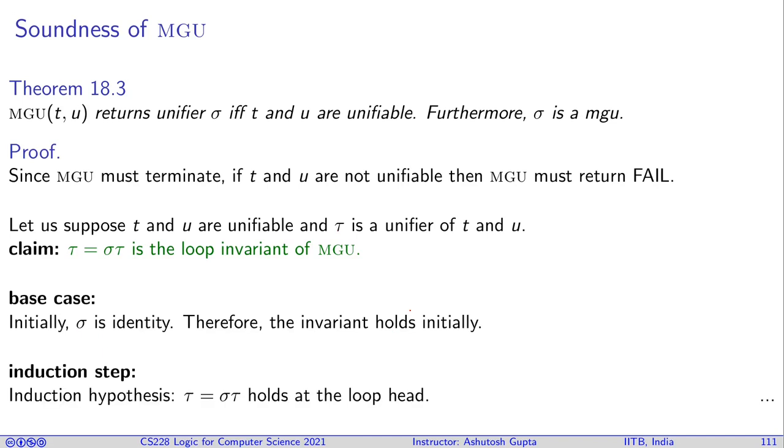Now we assume an induction hypothesis that at the head of the loop, tau equals sigma tau holds, and then we are going to show that after the loop iteration you will not fail and this property will continue to hold.